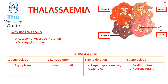In alpha thalassemia, patients with one or two gene deletions are asymptomatic. When there are three gene deletions, the patient will suffer from jaundice and hepatosplenomegaly. If there are four gene deletions, the patient will unfortunately suffer from hydrops fetalis and inevitably death in utero.